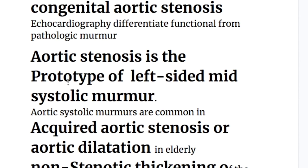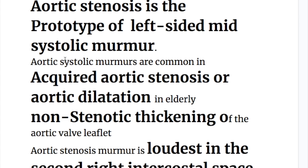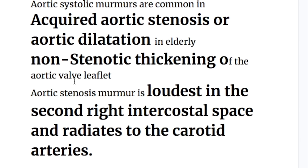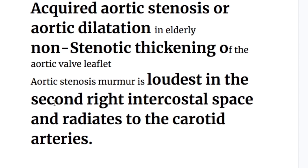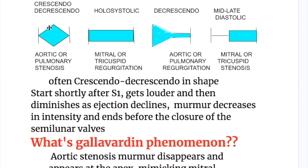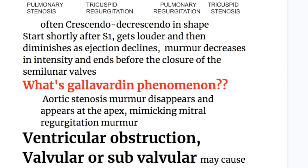Aortic stenosis is the prototype of left-sided mid systolic murmurs. Aortic systolic murmurs are common in acquired aortic stenosis, and also occur in aortic dilatation in the elderly and non-stenotic thickening of the aortic valve leaflet. The aortic stenosis murmur is loudest in the second right intercostal space and radiates to the carotid arteries in the neck. When the aortic valve becomes immobile due to calcification, A2 becomes soft or disappears. Often crescendo-decrescendo in shape, they start shortly after the first heart sound, get louder, then diminish, and end before the second heart sound.